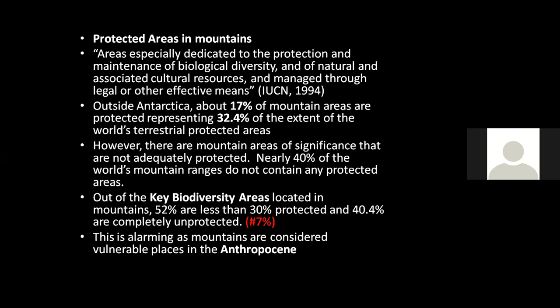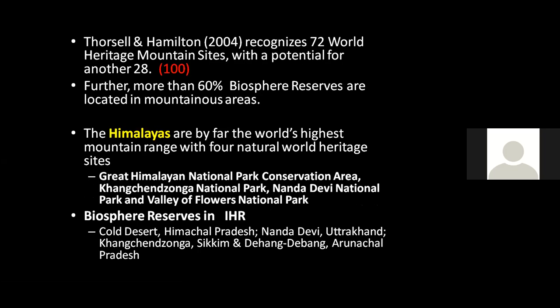Around 52% of mountain key biodiversity areas are less than 30% protected — an alarming situation. Looking at the Thorsal-Hamilton recognition, around 100 sites are recognized as heritage mountain sites, of which 72 are already recorded and 28 are potential. More than 60% of biosphere reserves under UNESCO's Man and Biosphere programme are located in mountainous areas.